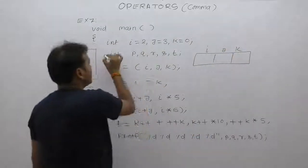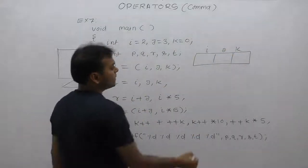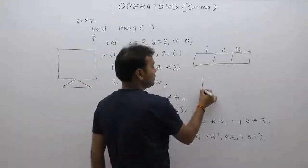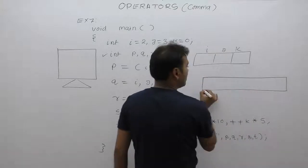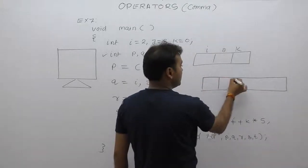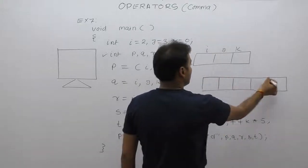Next one, in the second declaration we are declaring five more variables to store the result of different comma expressions: p, q, r, s, and t.